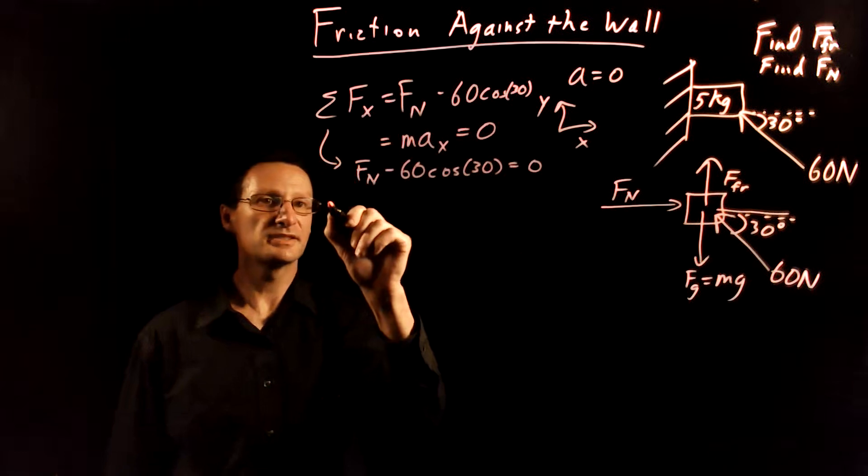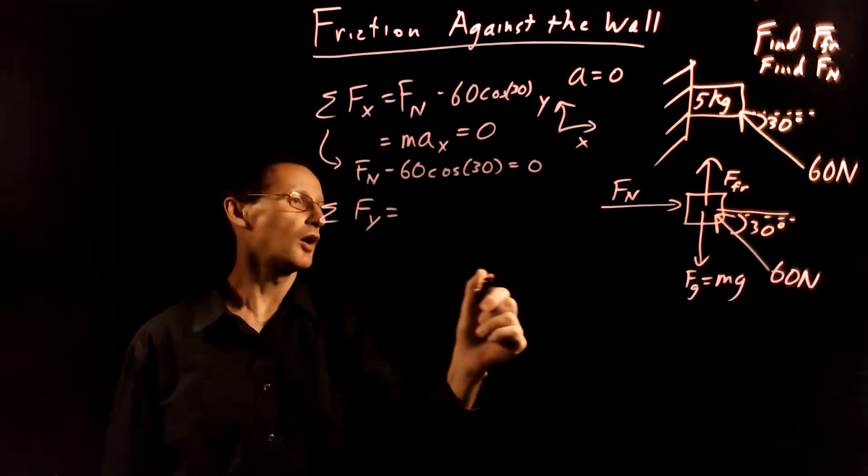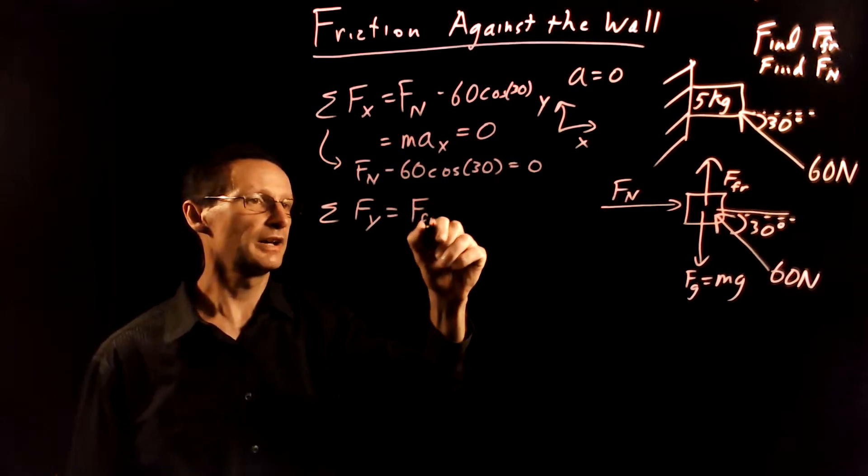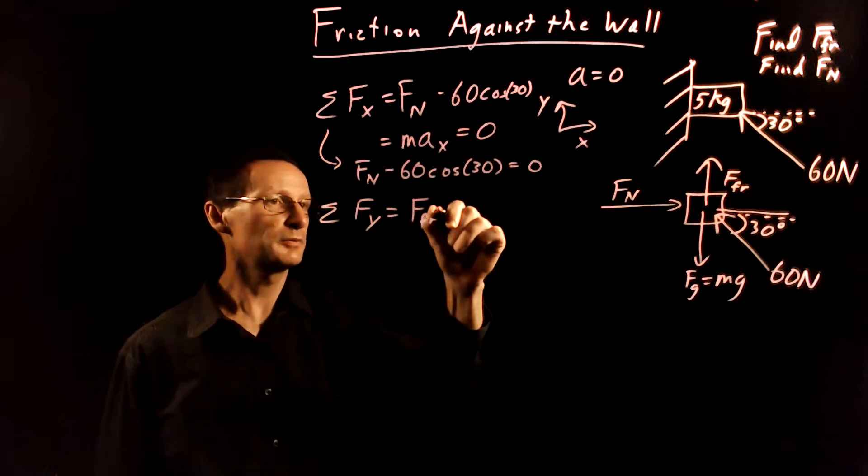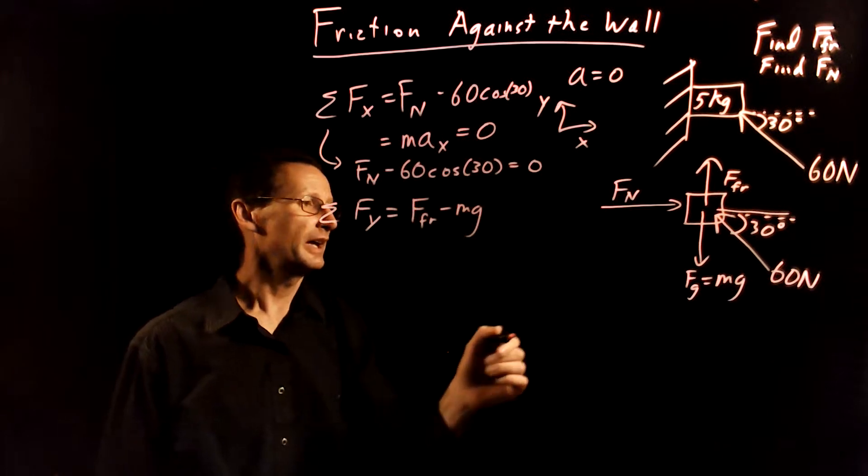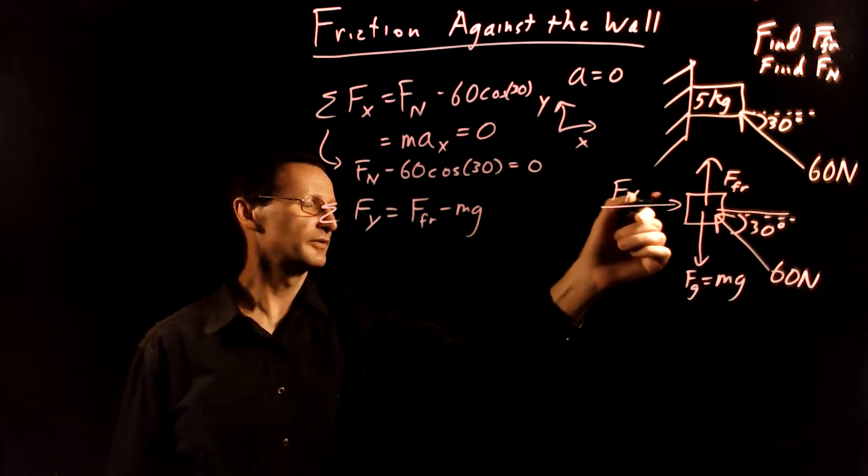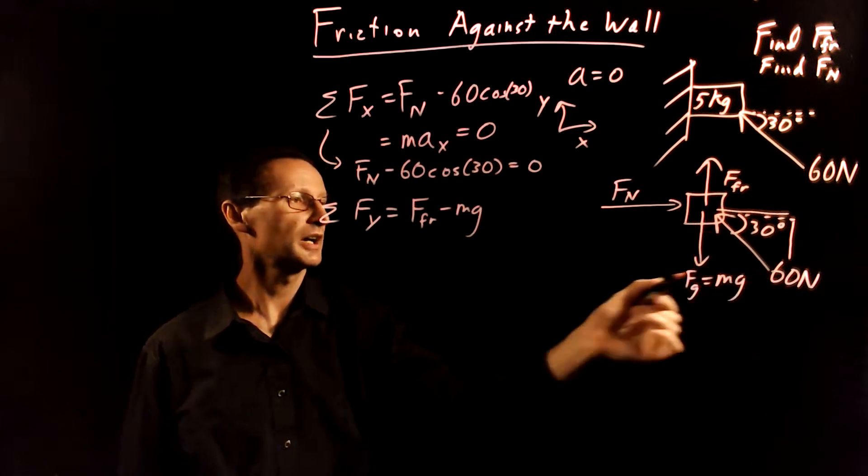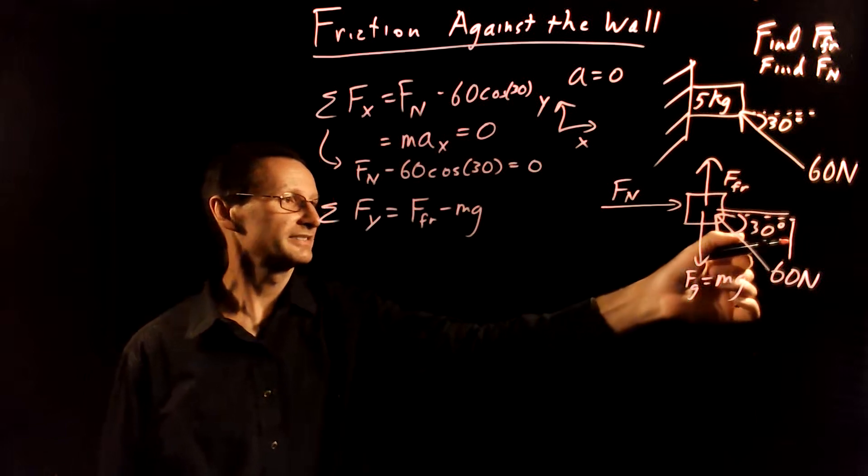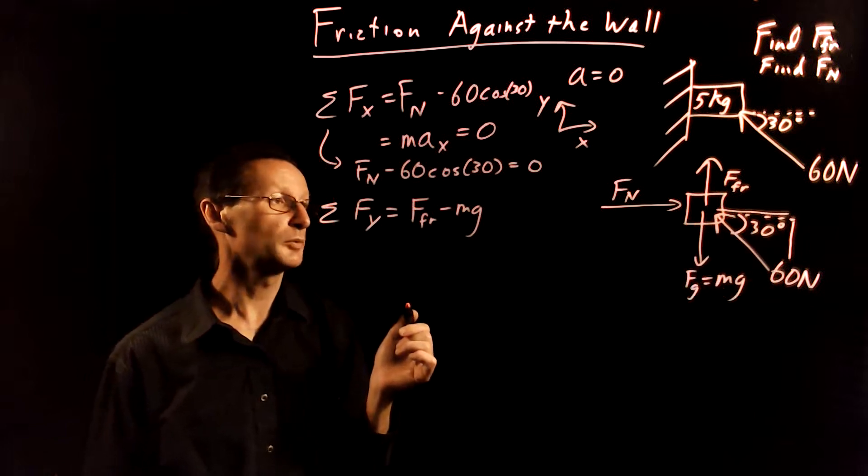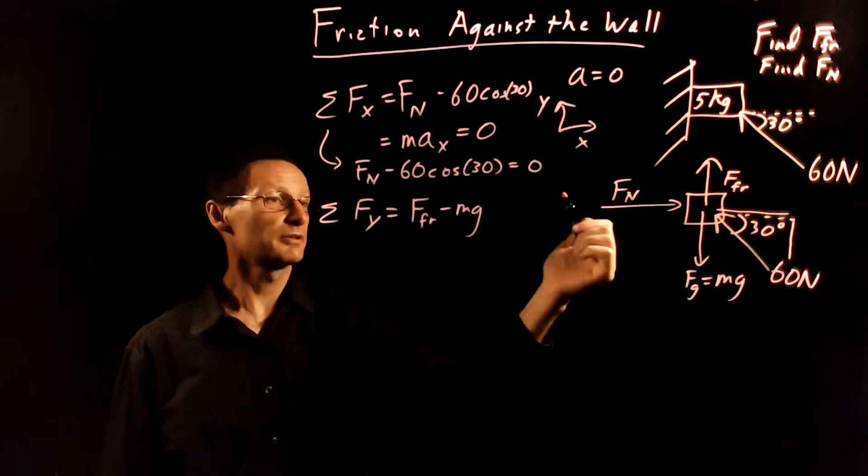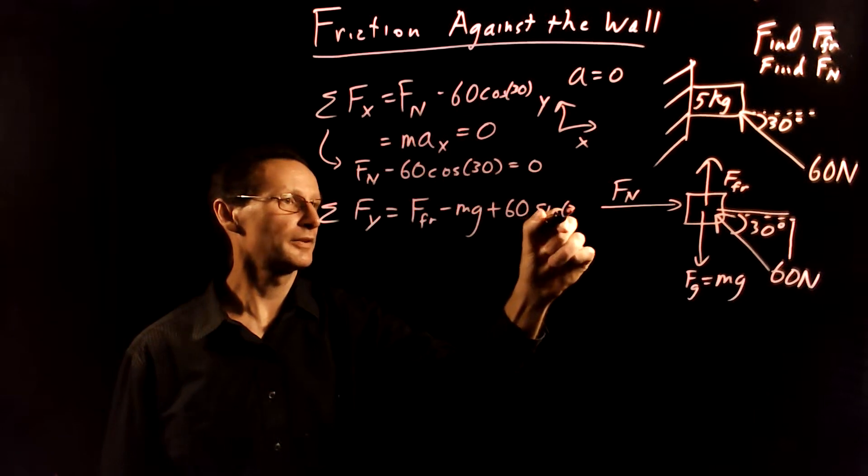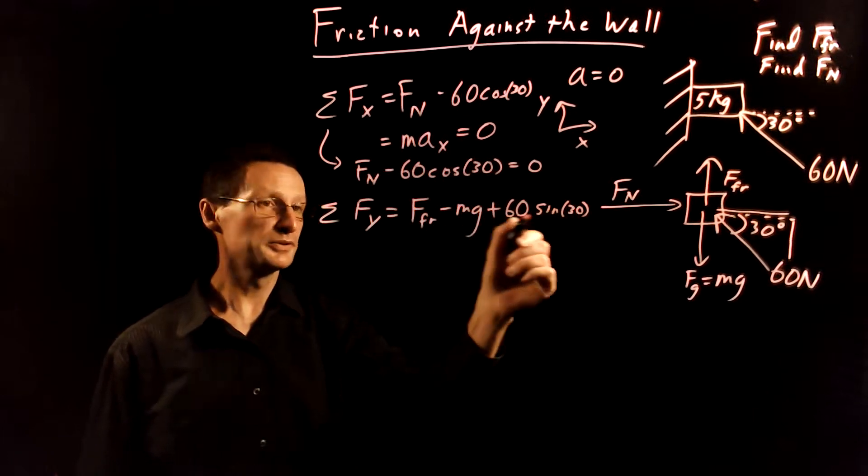Now let's sum the forces in the y direction. We have sum of the forces in the y direction where we have frictional force which is up. That's going to be a positive component. We have gravity which is down minus mg and then we have part of this. The normal force is perpendicular so that doesn't enter in. We need this vertical portion of the 60 newton force. That side is opposite to the 30 degree angle so we want sine for that and that one points generally up so that's going to be a positive 60 and I want sine of 30 degrees for that. Okay those are all the forces in the y direction.